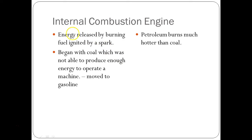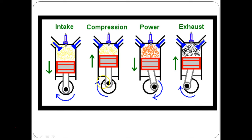Now we get to the internal combustion engine — energy released by burning a fuel ignited by a spark. It began with coal, which was not able to produce enough energy to operate a machine, then moved to gasoline. Petroleum burns much hotter than coal and does the trick. Looking at a piston in our engines, we have four strokes: intake — gasoline fumes come in; compression — the gas is compressed below the spark plug; power — the spark plug ignites it and pushes the piston back up; and exhaust — combustible material is pushed out and the process begins again. This is all happening within a few seconds.